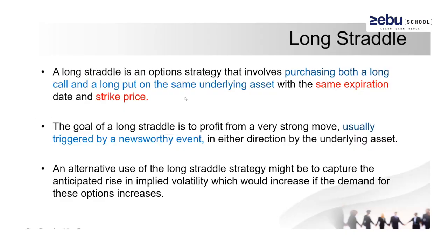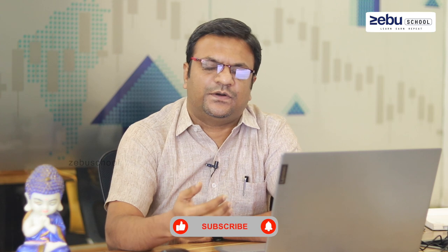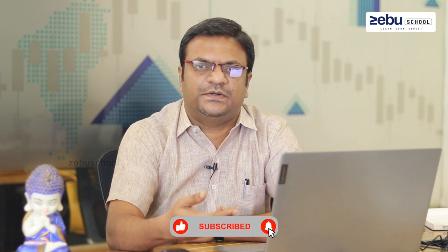Usually, this kind of option straddle will work and we can get profitability during a market that is moving in one side direction, or based on a news-based event. That is when we can get profitability in this long option straddle. What are the other steps we need to follow to grab the most profitability in this option straddle? First I will share how to frame this setup, then I will tell you how to execute it.